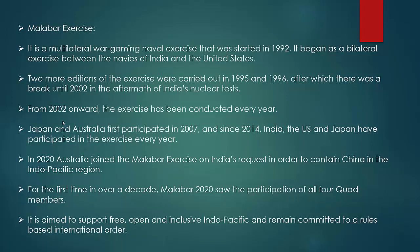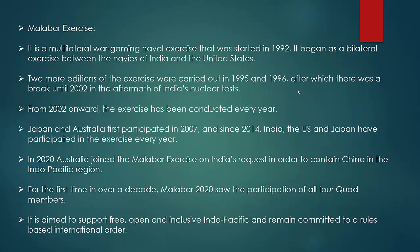It is a multilateral war-gaming naval exercise that was started in 1992. In 1992, it began as a bilateral exercise between the navies of India and the USA. Two more editions were carried out in 1995 and 1996, after which there was a break until 2002 in the aftermath of India's nuclear test. From 2002 onward, the exercise has been conducted every year. Japan and Australia first participated in 2007, and since 2014, India, US and Japan have participated in the exercise every year.